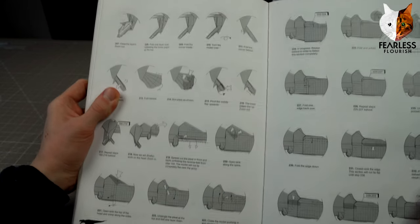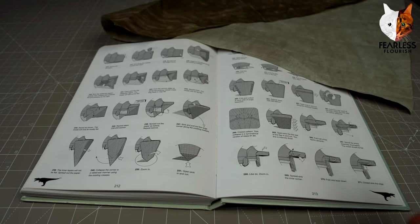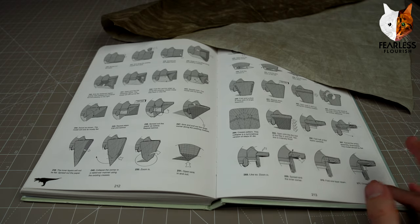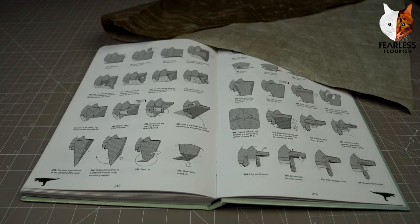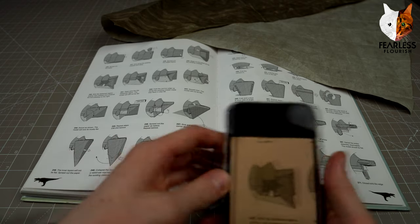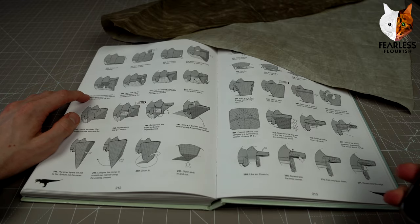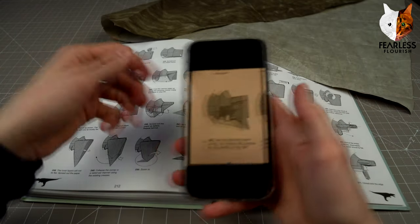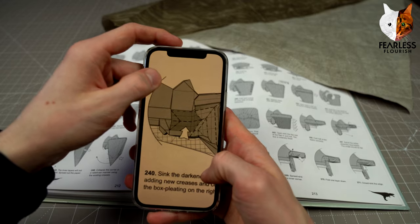Tip number five is one that a friend gave me. I'm not sure who it was that recommended this for me to try. Once I explain it, if this was you, please let me know so I can credit you. It's such a genius way I never thought about doing this. This works for any diagram, but we'll use step 240 from his giganto, which I took a picture of on my phone, which is here.